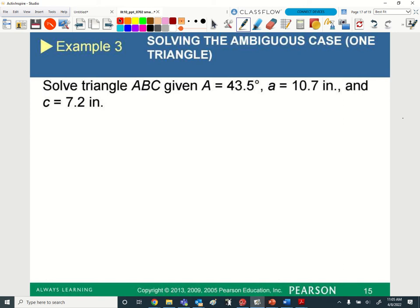Now, let's go ahead and do this. So on Example 3, what's the first thing I should do? Draw a triangle. Draw a triangle. So let's go A, B, C, big A. So that's my angle, 43.5 degrees. Little a, what line segment is little a going to be? BC. So I'm going to put 10.7 inches there. And little c, what line segment is little c? There it is. So it's going to be 7.2 inches.